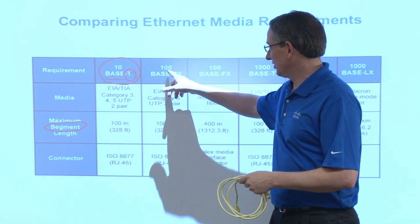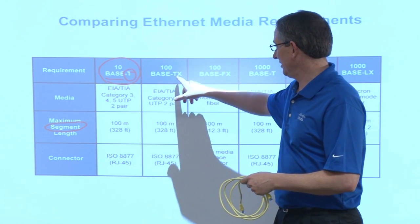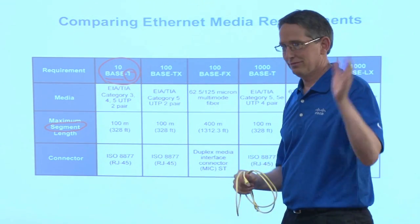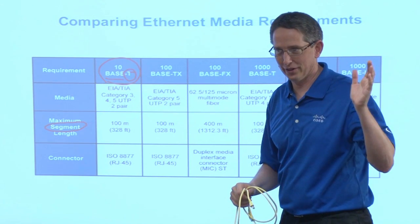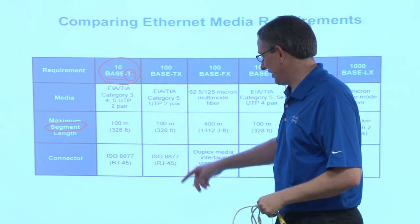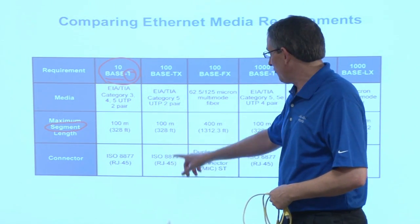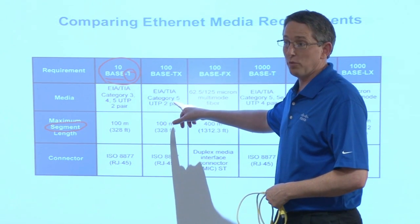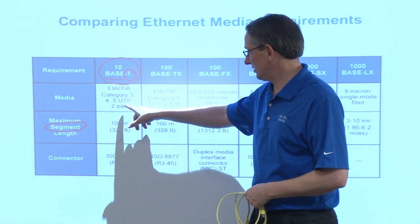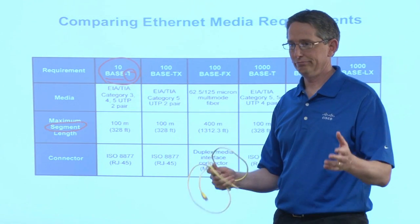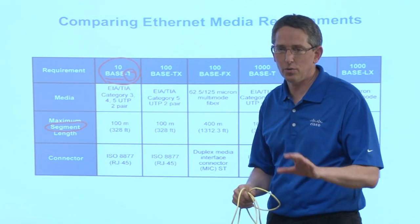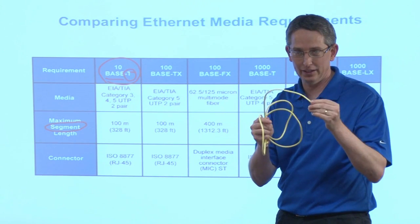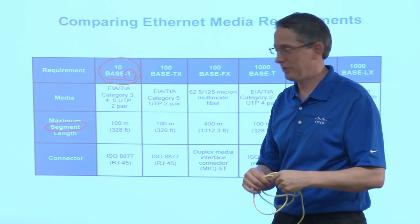100BASE-TX is 100 megabits per second, baseband, and TX — they use TX instead of just T; it's their standard. So 100 meters again, same type of connectors. For this, you need a category 5 cable or better. For 10 megabits, you can almost run it on barbed wire — not quite — but it doesn't take a lot of quality in the cabling and the twist per foot to make it work.